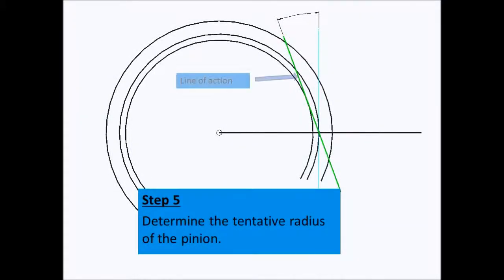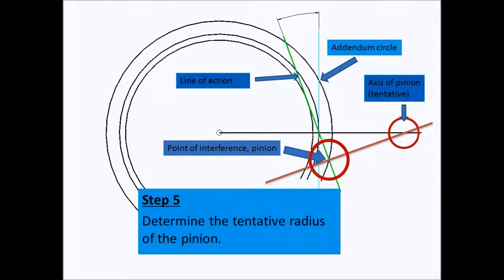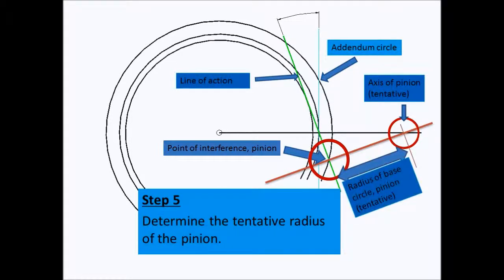We can now proceed with the determination of the tentative radius of the pinion. The intersection of the line of action and the addendum circle gives us the point of interference of the pinion with the gear. From this point we draw a line that intersects the line of centers, and that intersection is the tentative axis of rotation of the pinion. This distance is the tentative radius of the base circle of the pinion.